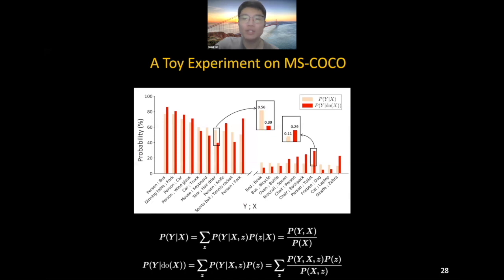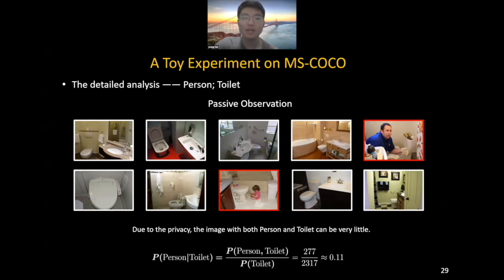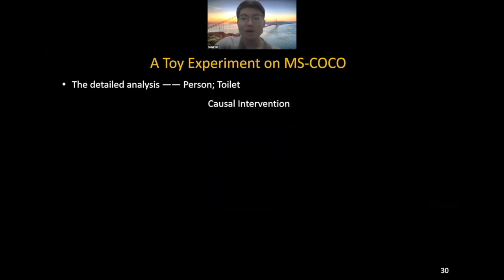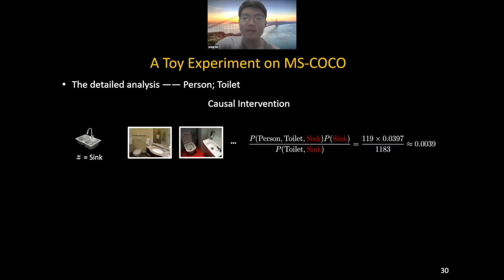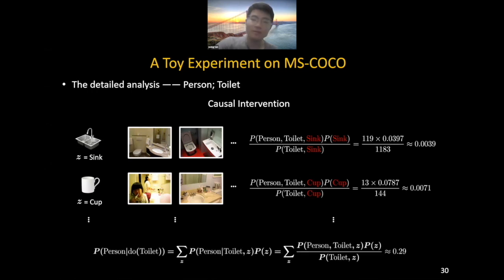To further demonstrate the effectiveness of causal intervention in our CV community, we perform a toy MS COCO experiment with ground truth object labels. We compare the difference between association P(Y|X) and causal intervention P(Y|do(X)). For the example of person and toilet: calculating the passive observation P(person|toilet) — given a region of toilet, how likely does a person exist? Due to privacy, images with both person and toilet can be very few in the dataset, so P(person|toilet) can be low. When we conduct causal intervention, the contextual bias is manually cut off. Any possible confounder Z is fairly incorporated into this image according to prior P(Z). Finally, we can observe that P(Y|do(X)) becomes higher. Thanks to the intervention, we increase P(Y|do(X)) by borrowing non-local objects across the whole dataset to alleviate observational bias.